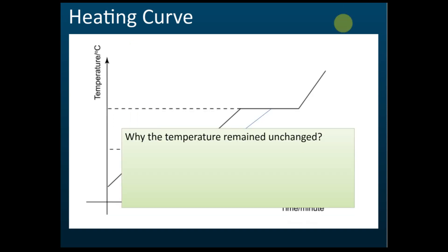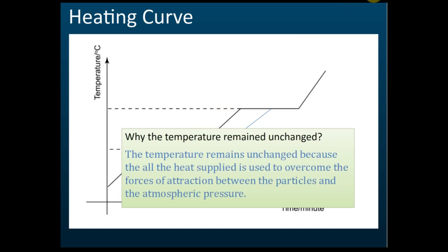They will also ask why the temperature remains unchanged when the substance undergoes boiling. The explanation is similar, but with a little difference: the temperature remains unchanged because all the heat supplied is used to overcome the force of attractions between the particles and the atmospheric pressure during boiling. Not only do we need to overcome the force of attractions, we also need to overcome the atmospheric pressure pressing on the particles of the liquid — so there are two forces to overcome.